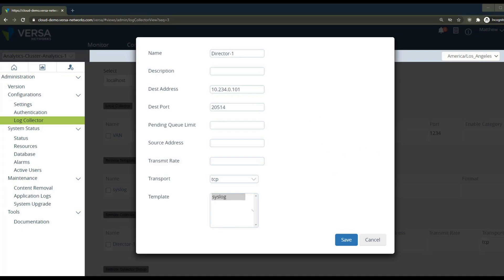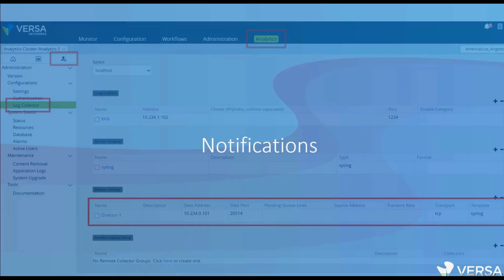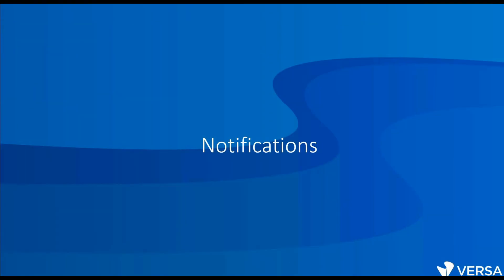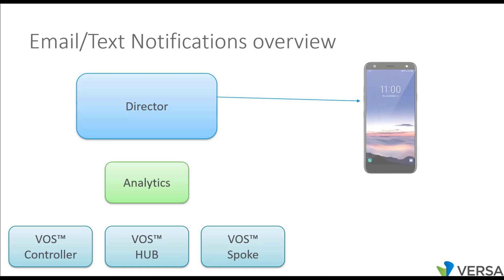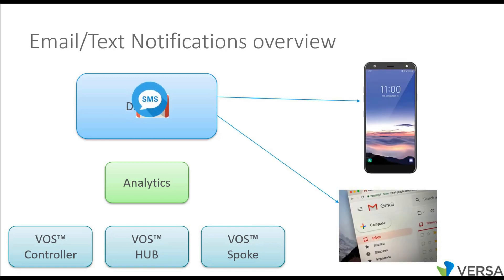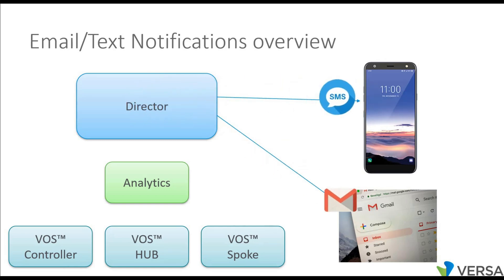Next, we're going to go into the overview of notifications. What are notifications? Notifications are messages that are going to be sent based on events to a destination email address or phone number that you specify. Any event that happens on the director can be sent as a notification to you.